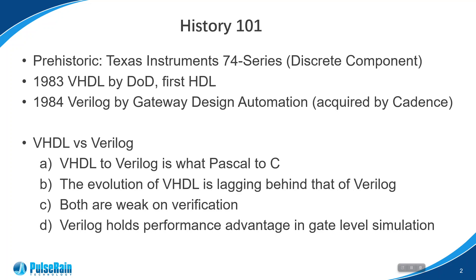But Verilog made up for this by upgrading itself to SystemVerilog. As a superset of Verilog, SystemVerilog is rich in features to enhance verification. D: For gate-level simulation, Verilog holds a performance advantage over VHDL because it has built-in primitives to describe gate-level components, while VHDL has to rely on VITAL libraries. As a result, most third-party simulation libraries are made in Verilog, so if your design is in VHDL, you have to acquire a mixed-language license in addition to your existing VHDL license. EDA licenses are notoriously expensive.